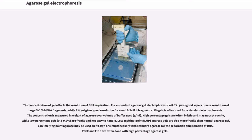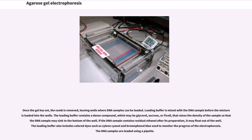PFGE and FIGE are often done with high percentage agarose gels. Once the gel has set, the comb is removed, leaving wells where DNA samples can be loaded. Loading buffer is mixed with the DNA sample before loading into the wells. The loading buffer contains a dense compound, which may be glycerol, sucrose, or ficoll, that raises the density of the sample so that the DNA sample may sink to the bottom of the well. If the DNA sample contains residual ethanol, it may float out of the well. The loading buffer also includes colored dyes such as xylene cyanol and bromophenol blue used to monitor the progress of electrophoresis. The DNA samples are loaded using a pipette.